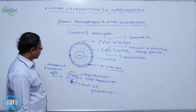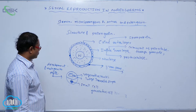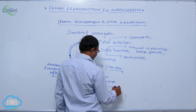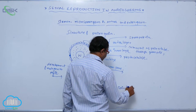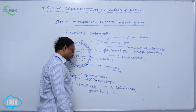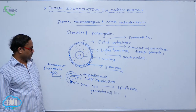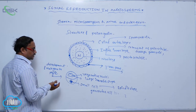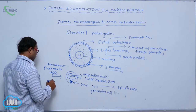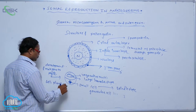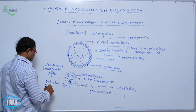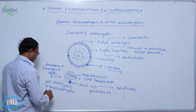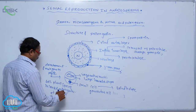The vegetative nucleus is not divided further. The generative cell is a small, spindle-shaped cell. Before pollination, 60% of plant species release pollen grains at a two-cellular stage — one vegetative cell and one generative cell.